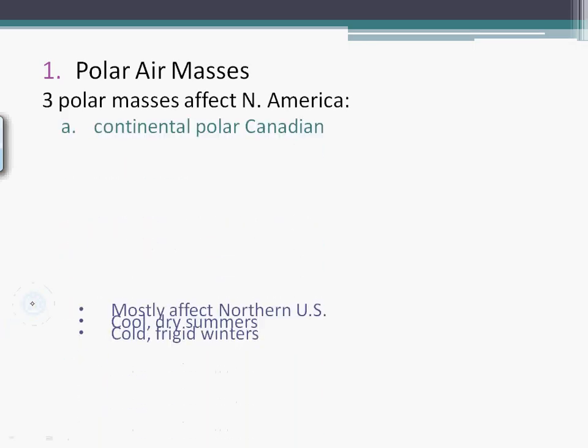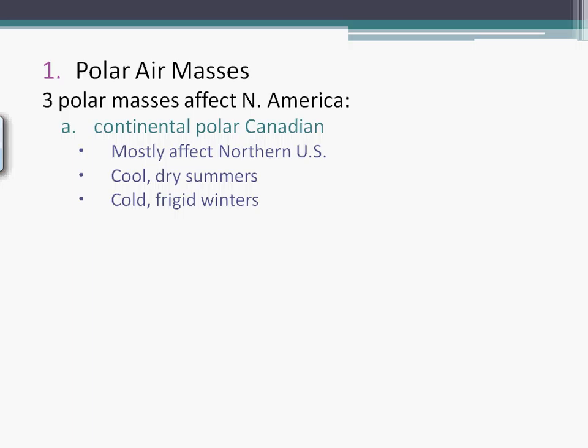The polar air mass — we refer to these as the Canadian clippers. Cold, dry summers and cold, frigid winters. When we have the polar vortex, all that means is the jet stream is dipping from deep up in Canada down onto us, bringing that extreme cold weather.